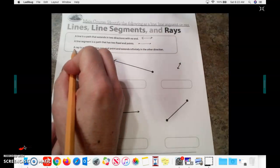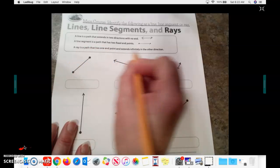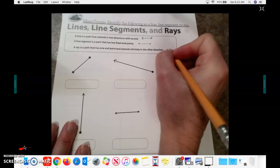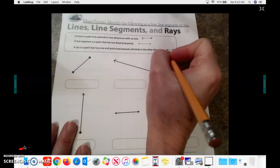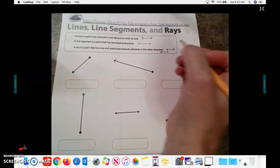Okay. And then finally, a ray is a path that has one end point and keeps going in the other direction. So we would have a starting point and it would go in one direction. Okay. Now it may go either way. Starting point and it goes in one direction.